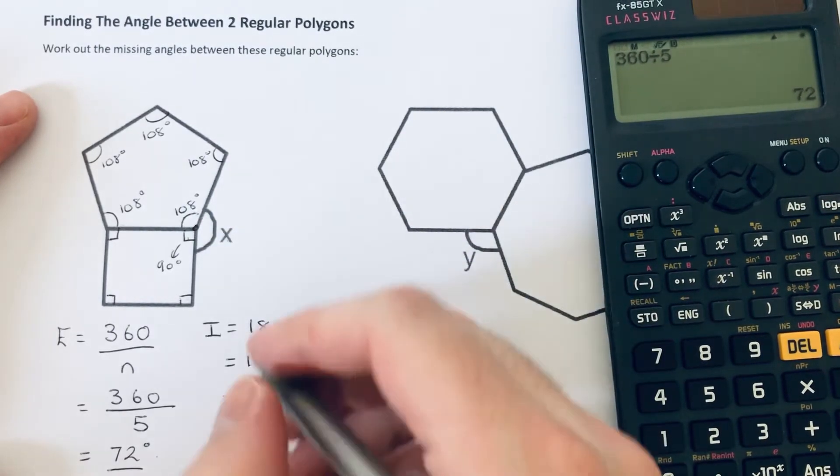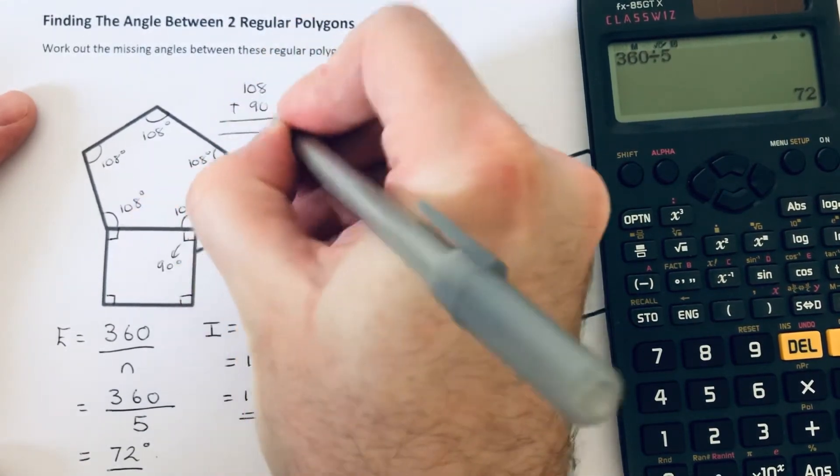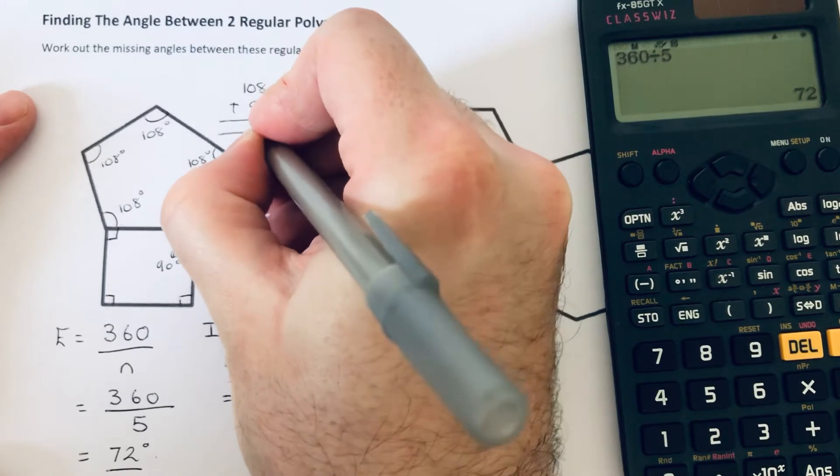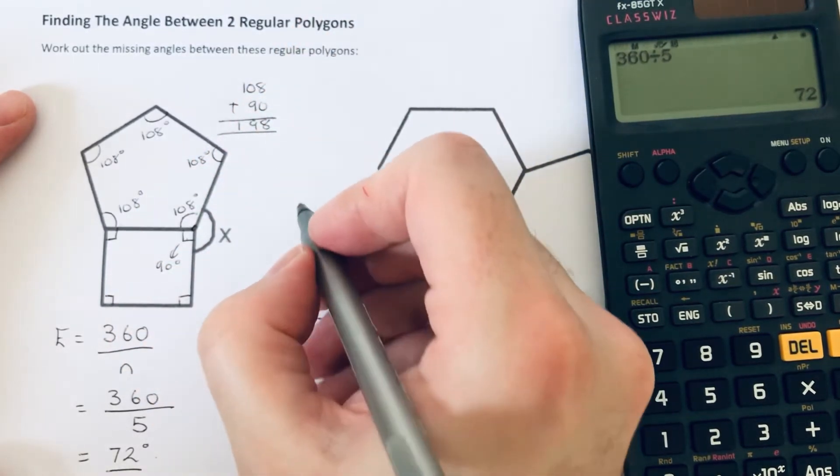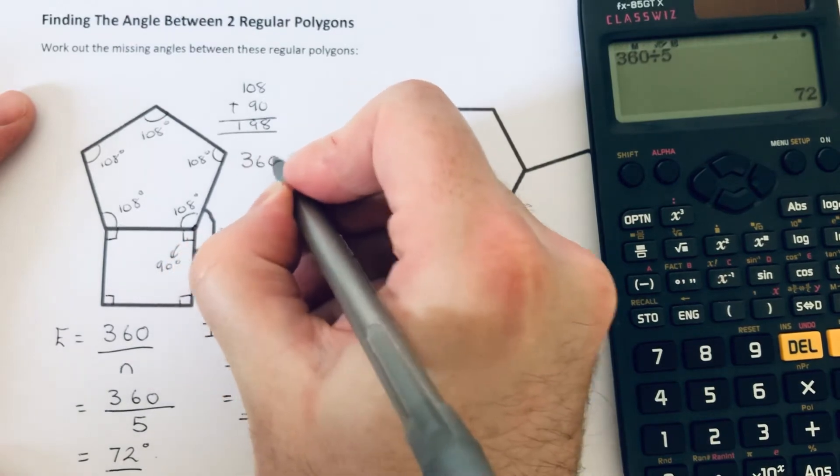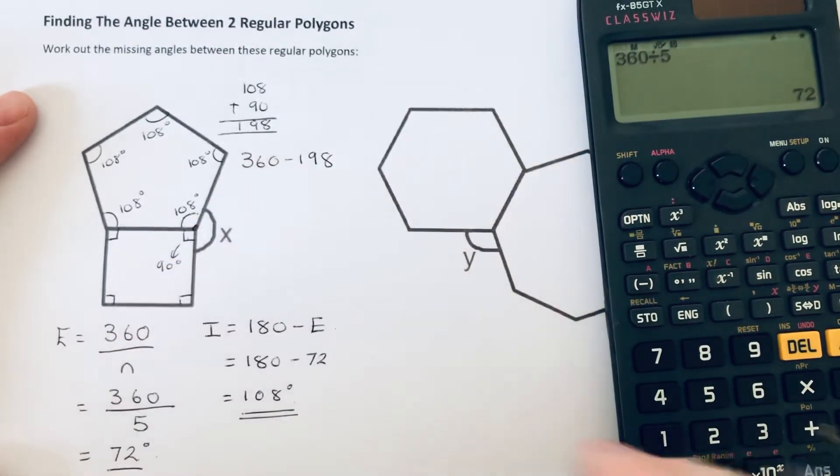So we go 108 and 90, so that will give us 198. And then if we take this answer away from 360 because angles around a point add up to 360.